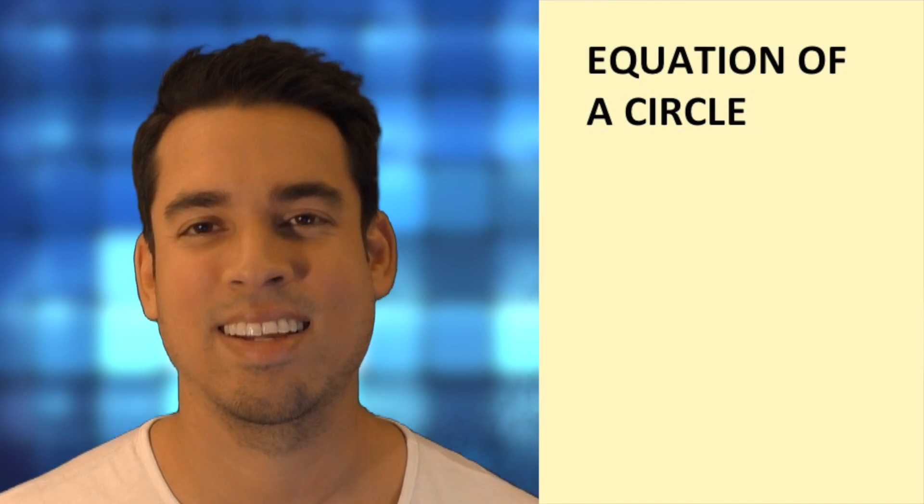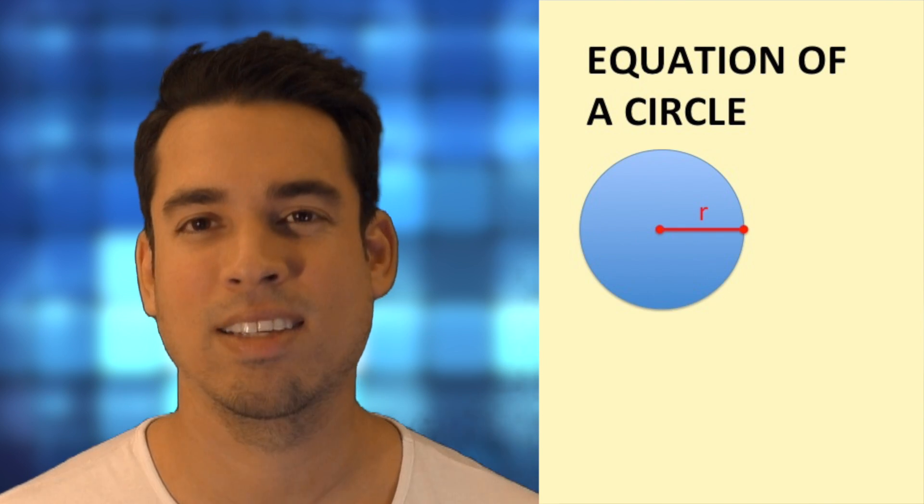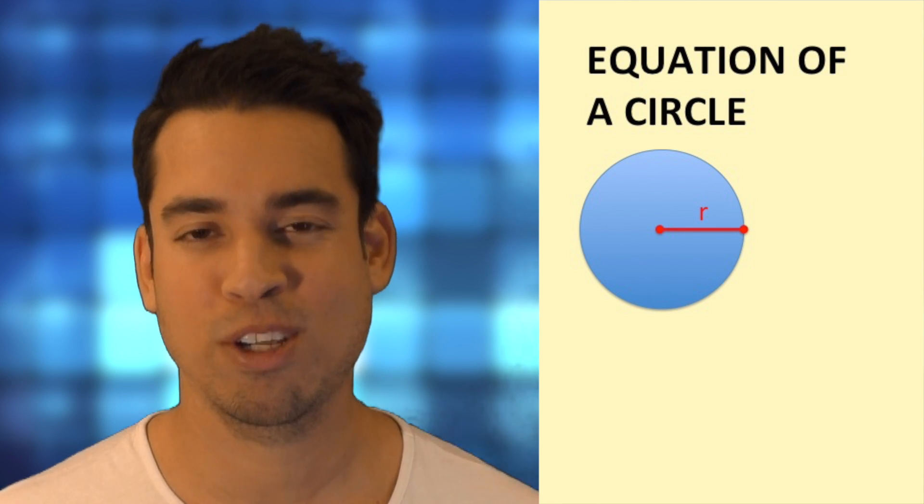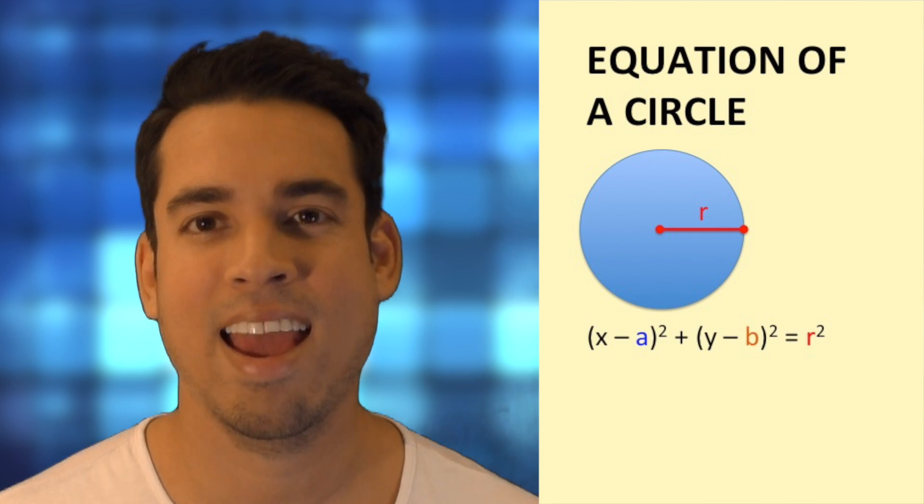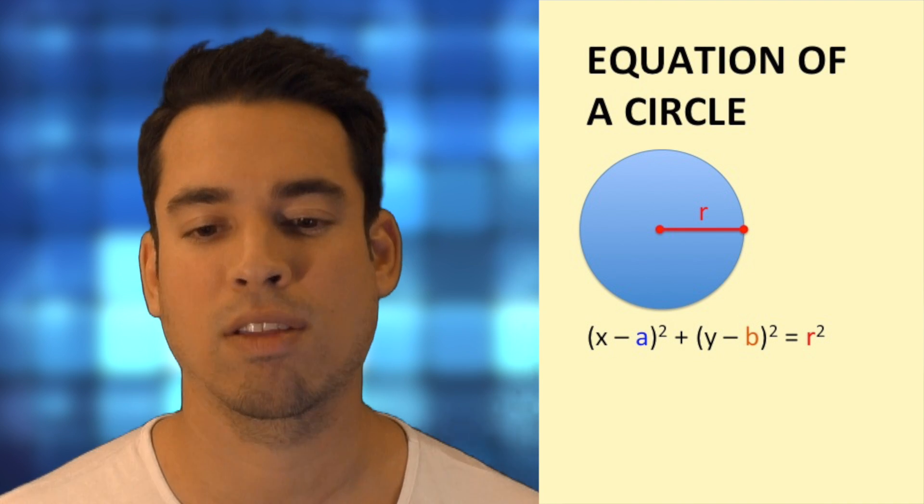Next, let's talk about an equation for a circle in the xy coordinate plane. Let's say we know that r is the radius. The equation of a circle is pretty cool. It's x minus a squared plus y minus b squared equals r squared, where r is the radius.